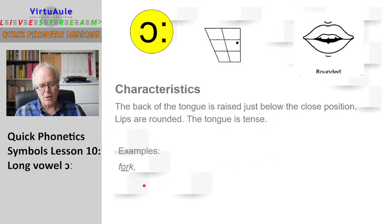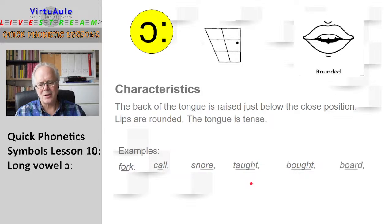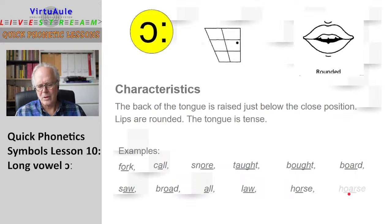Let's see a few words: "fork," "call," "snore," "taut," "bought," "saw," "broad," "all," "law," "horse." So you see that this sound can be produced through the letters in many different ways.